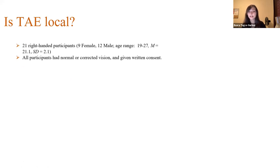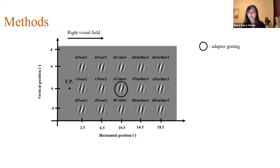We collected data from 21 participants and this graph shows our test locations where we tested the spread of the tilt after effect. X axis shows the horizontal position and y axis shows the vertical position of the gratings in degrees. The cross sign shows the central fixation point. The wall circle shows the location of the adapter grating and other gratings show the other test locations. So we tested spatial spread of tilt after effect at 50 test locations, including the adapter location.